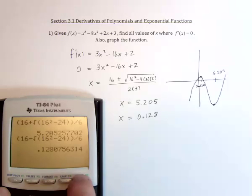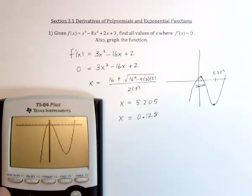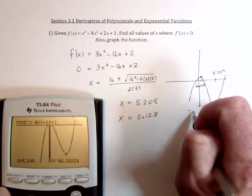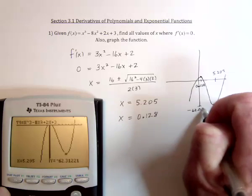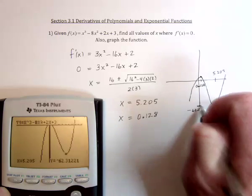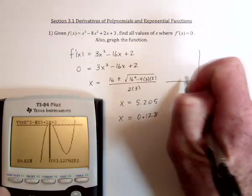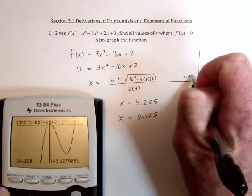I'm just going to verify it real quick. Trace 5.205 is the one at the bottom, at negative 62.312. And trace at the top was 0.128 for x, and the y value 3.127.